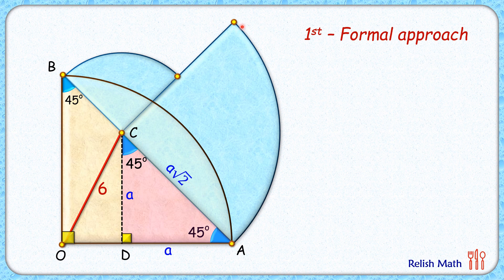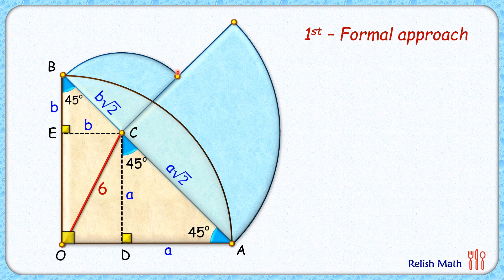Similarly, from point C, let's drop a perpendicular on BO and call this length 'b' centimeters. Thus BE will also be 'b' centimeters, and BC length will be b√2. So the radius of this small blue quadrant is b√2 centimeters. Here EC is 'b'.